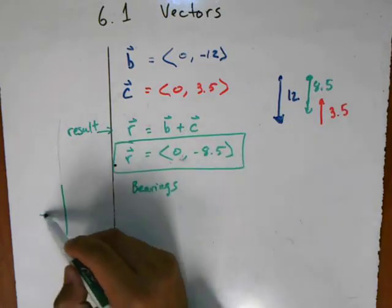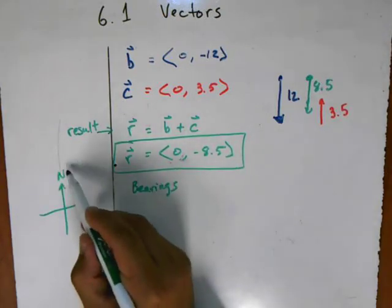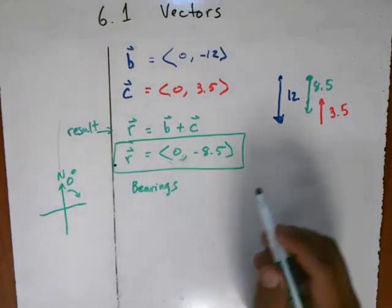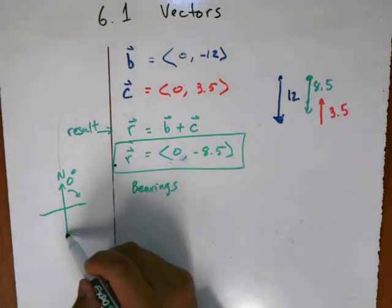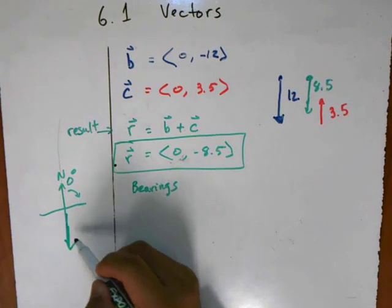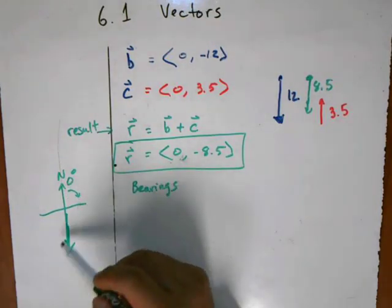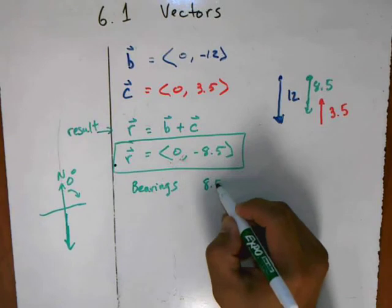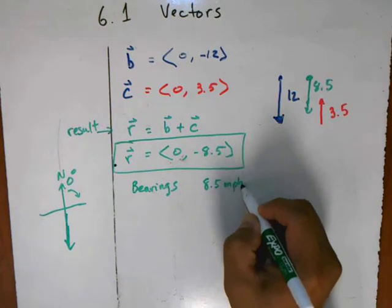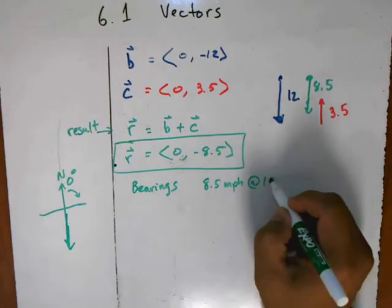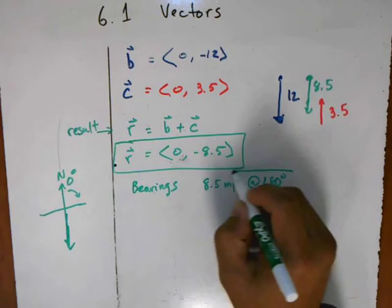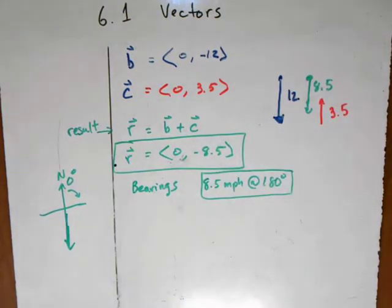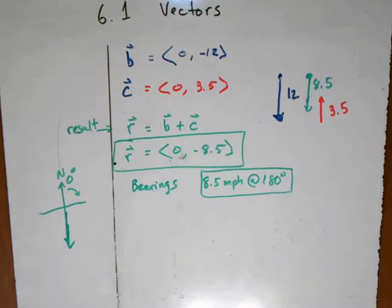What is the answer in bearings? Remember that for bearings, north is zero degrees and we're rotating clockwise. So going directly south means rotating 180 degrees. We can say this is 8.5 miles per hour at 180 degrees. In the world of navigation everyone will understand what this means, and when doing math or physics the component form is much more convenient.